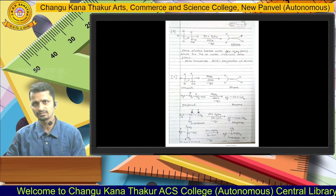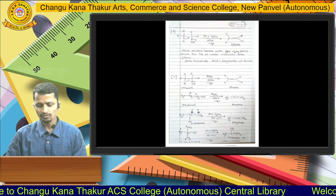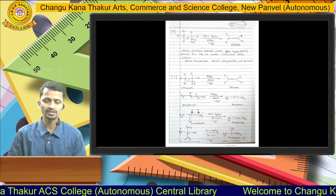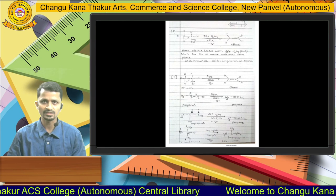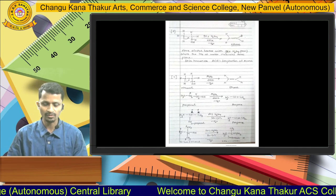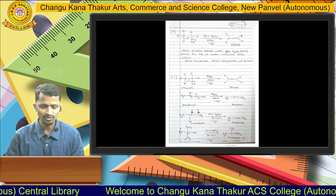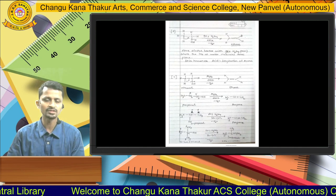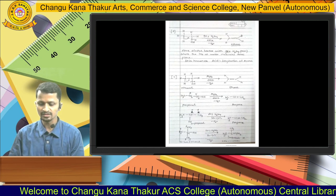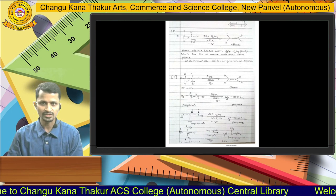2-propanol when treated with 60% sulfuric acid at a temperature of 160 to 170 degrees Celsius gives propene as the product. Also, tertiary butanol when treated with 20% sulfuric acid gives isobutene as the product.